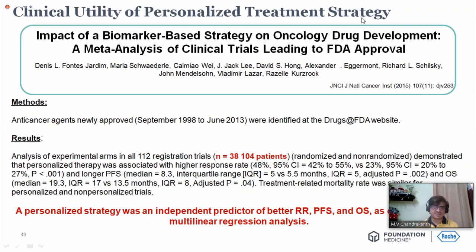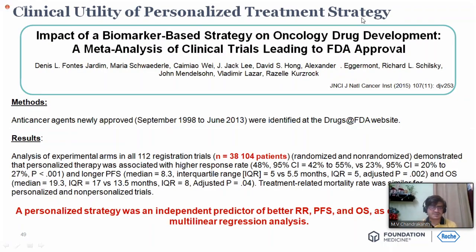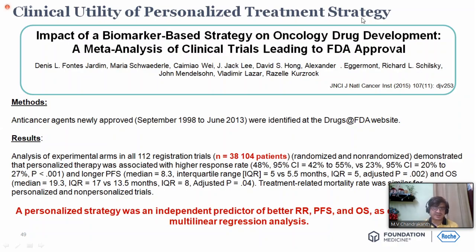What is the impact of a biomarker-based strategy? A meta-analysis showed that a personalized strategy was independently associated with better response rates. If we can pick up a targeted mutation, we can definitely improve response rates, PFS, and OS. This meta-analysis analyzed experimental arms in 112 registration trials with approximately 38,000 patients. It showed that personalized therapy based on a specific mutation produces a statistically significant improvement in response rates, progression-free survival, and overall survival — median improvement of 19.3 versus 13.5 months — with similar treatment-related mortality.